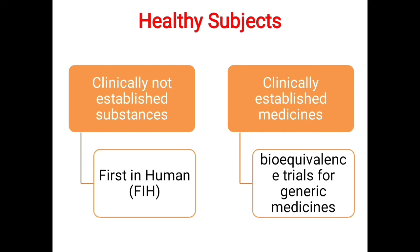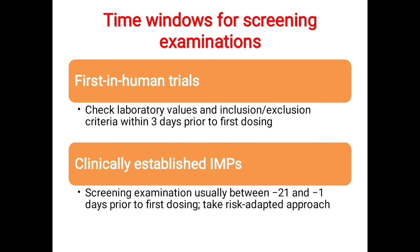Healthy subjects are usually enrolled in two types of clinical trials: first-in-human trials, where the substances are not clinically established, and bioequivalence trials, which are conducted with medicines that are already clinically established. Regarding screening examination, there is a time window. In first-in-human trials, laboratory values and eligibility criteria should be evaluated within three days prior to screening; if more than three days have passed, reassessment is required. In the case of clinically established investigational products, screening is usually conducted between 1 to 21 days before the screening day, though a risk-adapted approach may also be recommended.